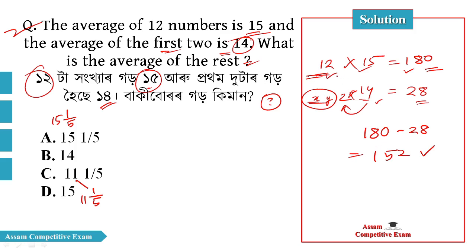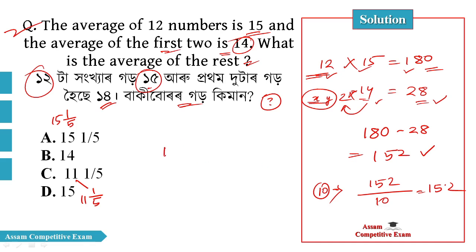The total is 12, and you have 28 for the first 2. The remaining 10 numbers sum to 152. So 152 divided by 10 is 15.2. The answer is 15.2.